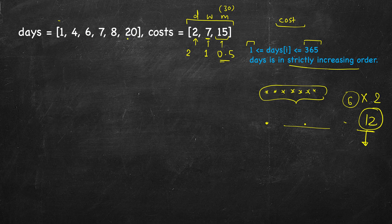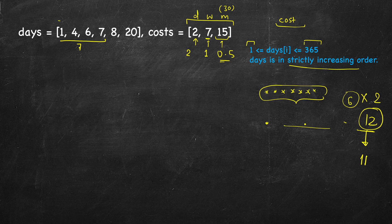Let's see how we can solve this. For the example with days 1, 4, 6, 7, 8, 20, the answer is not 12 but 11. You take a weekly pass on day 1, which is valid for 7 days and covers days 1 through 7. Day 20 is not within that week, so you take a daily pass for day 20. Total cost: 7 plus 2 equals 11.